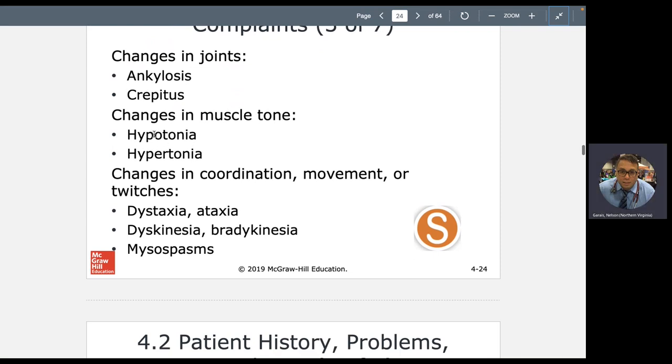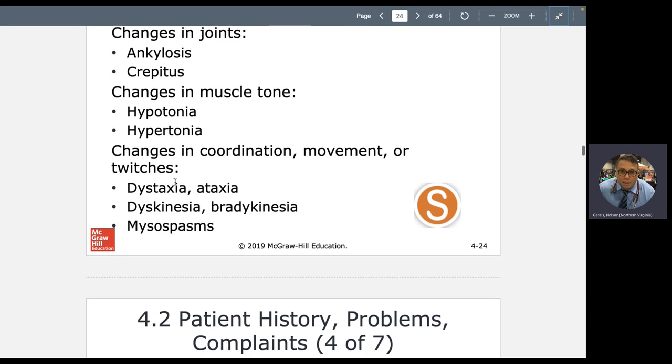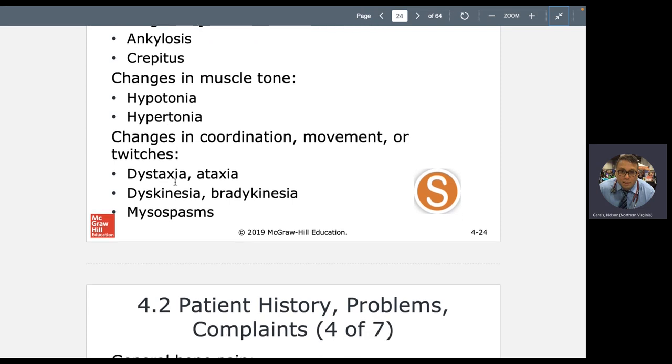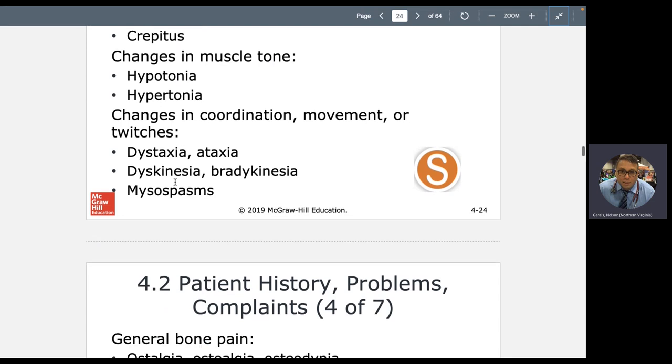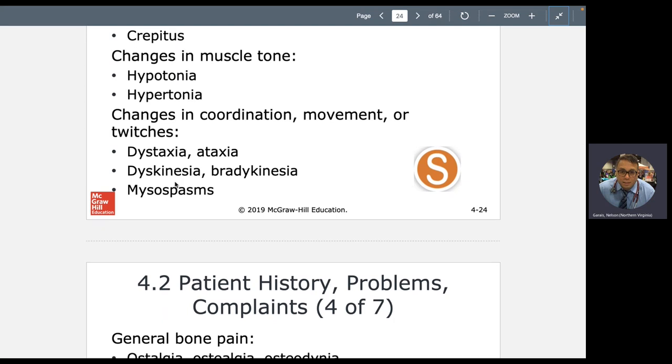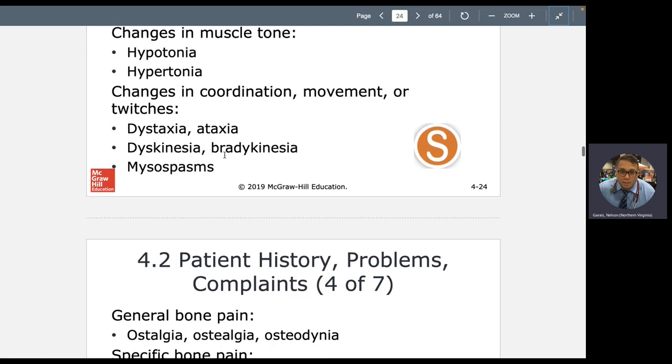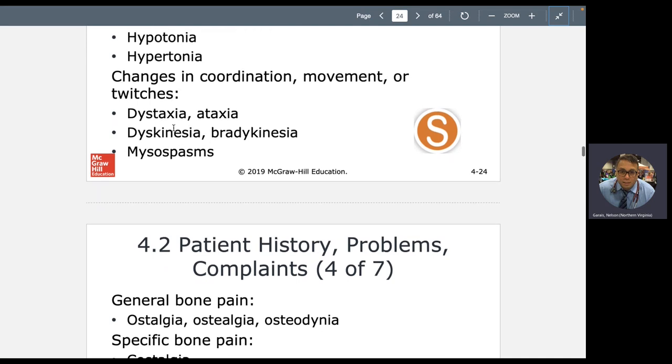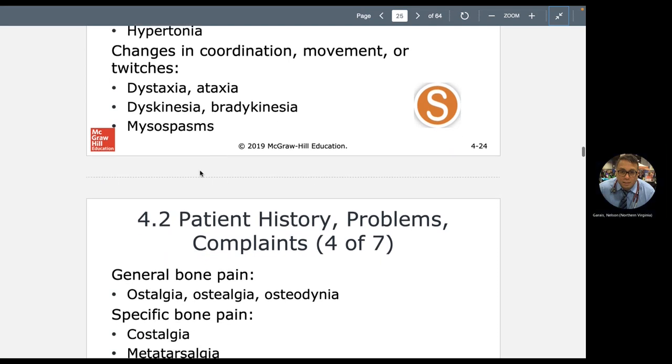Hypotonia, hypertonia. Hypo, not as much. Hyper, too much tone. Or muscle tone. There can be such thing as too much muscle tone if you're tensed out or if your muscles are spasming and they're contracting too much. Dystaxia, ataxia. Remember, tax, think contraction. And contraction is actually movement in the musculoskeletal world. Dyskinesia, bradykinesia. Remember, we talked about the effect of anti-seizure medications gives you dyskinesia or abnormal movements. State of condition of abnormal movements or bradykinesia, state of condition of slow movements.